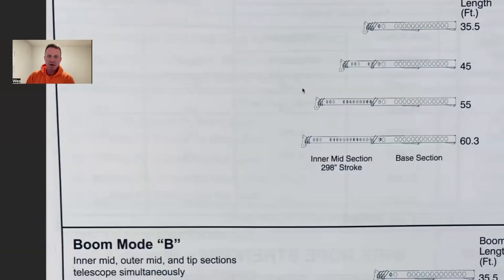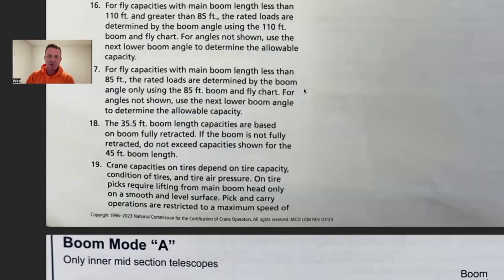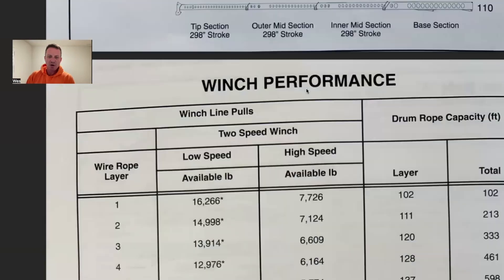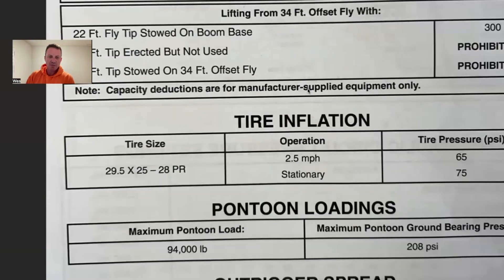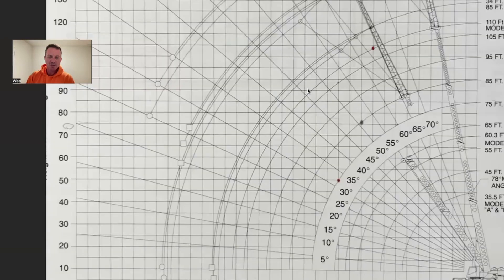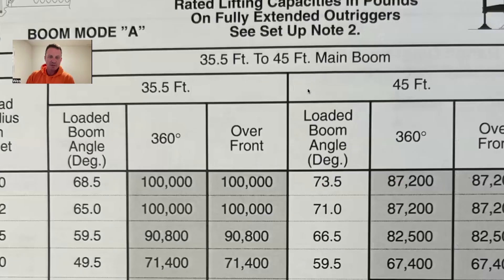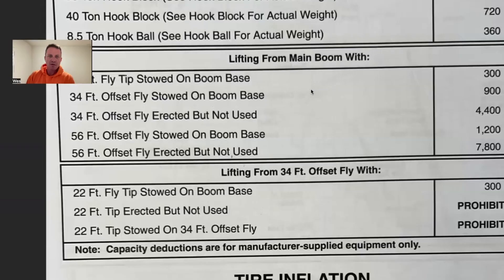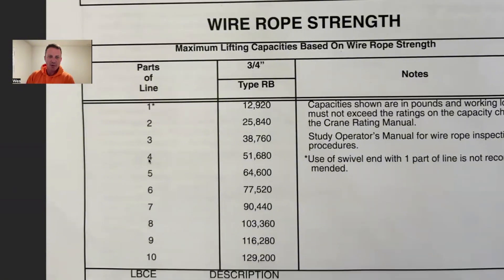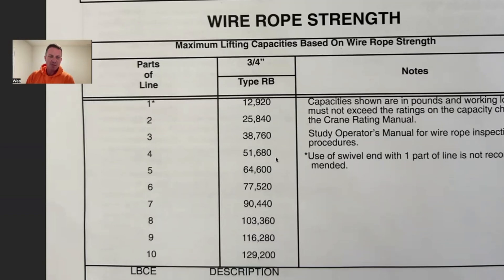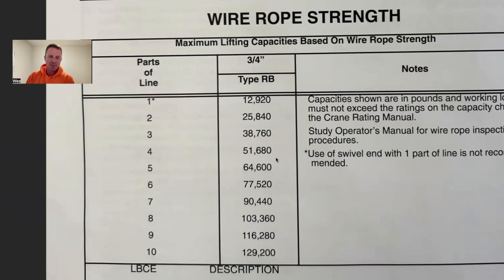We're on our load chart now and we're going to scroll down to our parts of line to see what we can pull with four parts of line. Here we have four parts of line, and that's 51,680 pounds. So we know that we're good for that with our four parts of line.